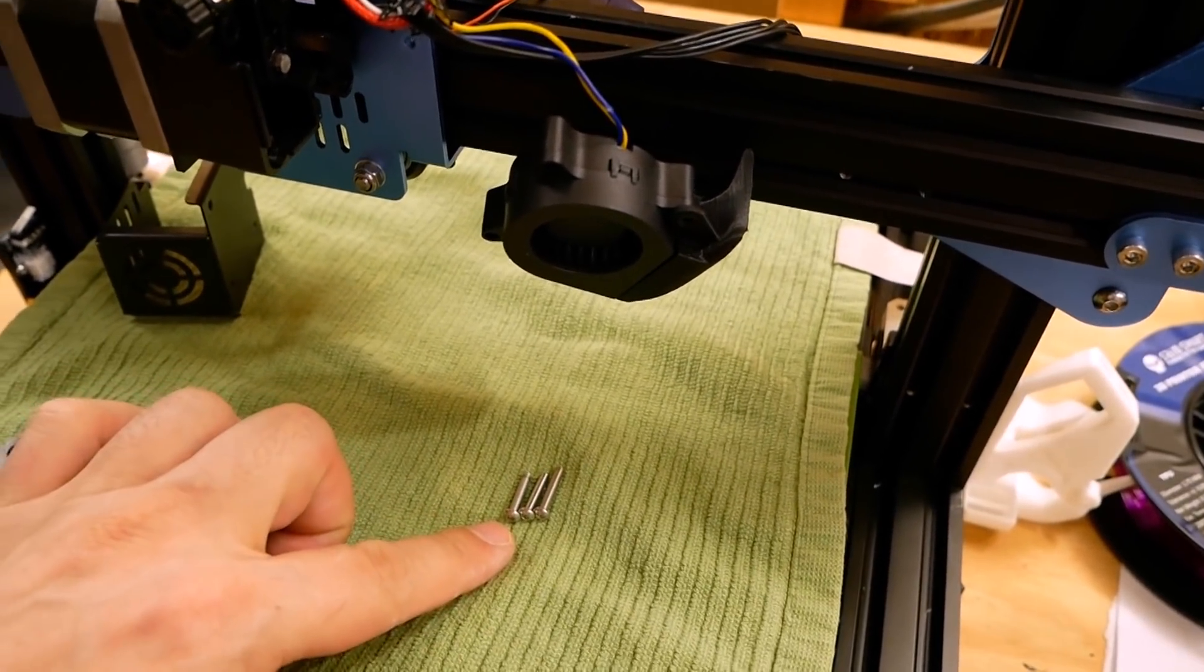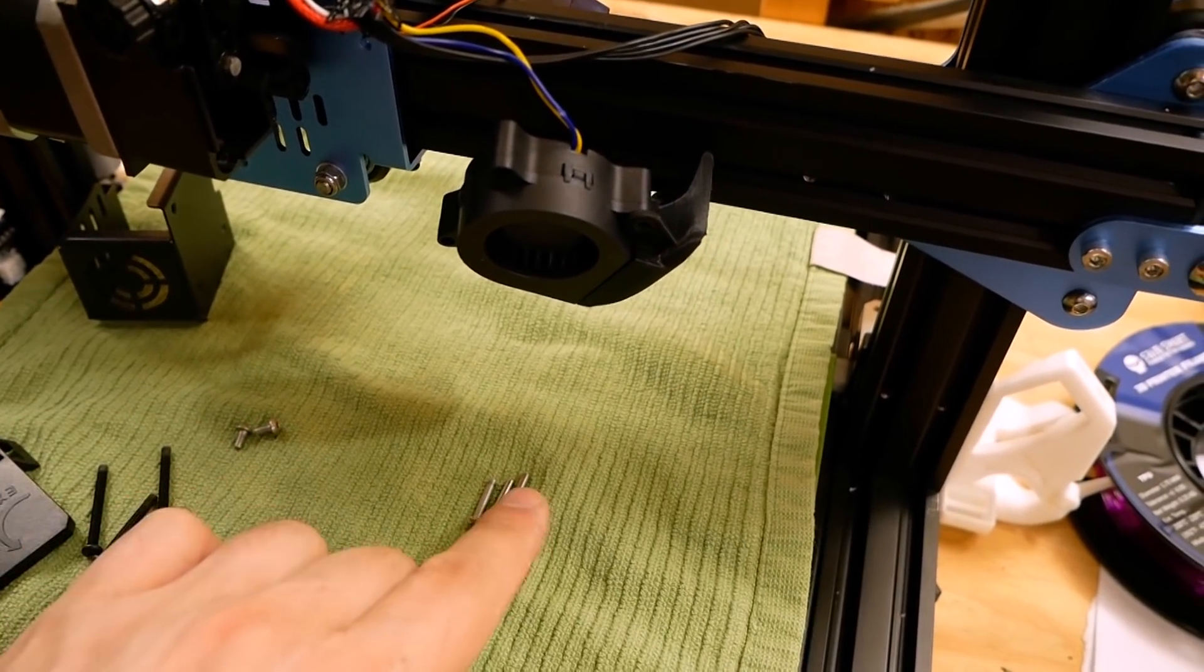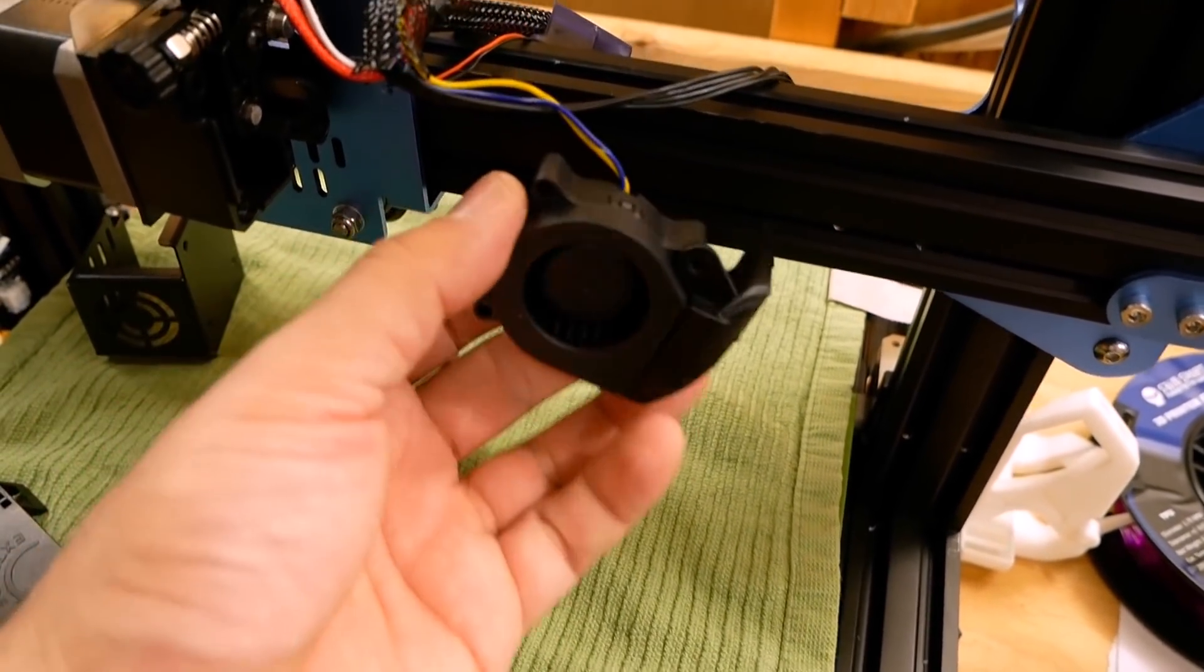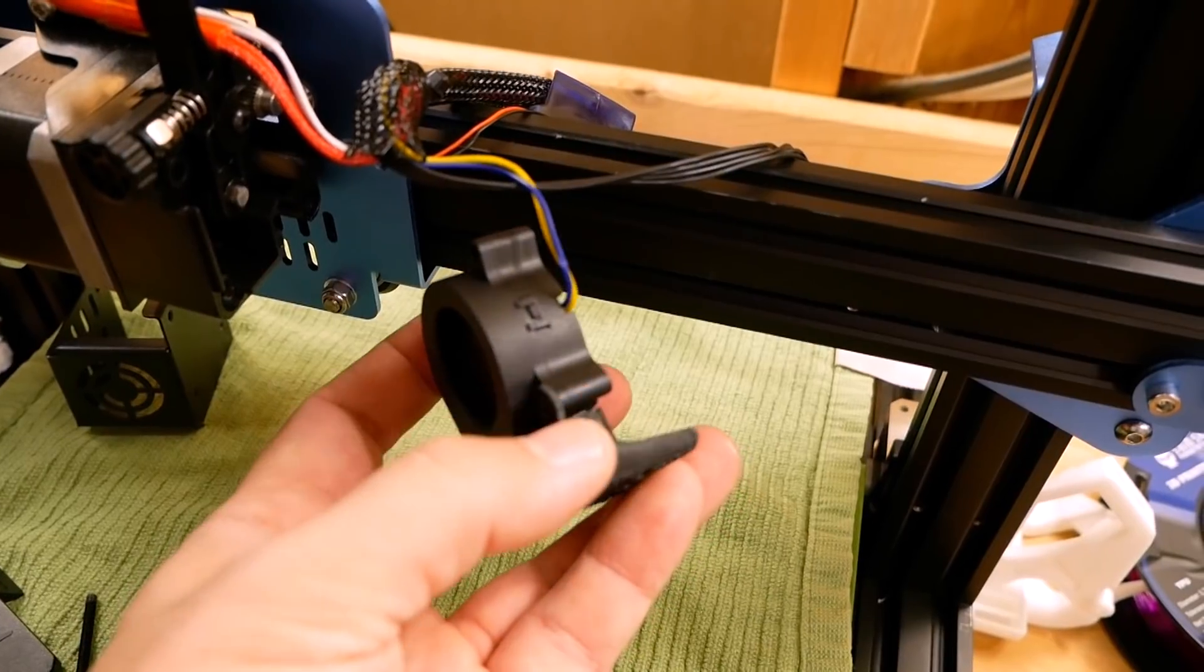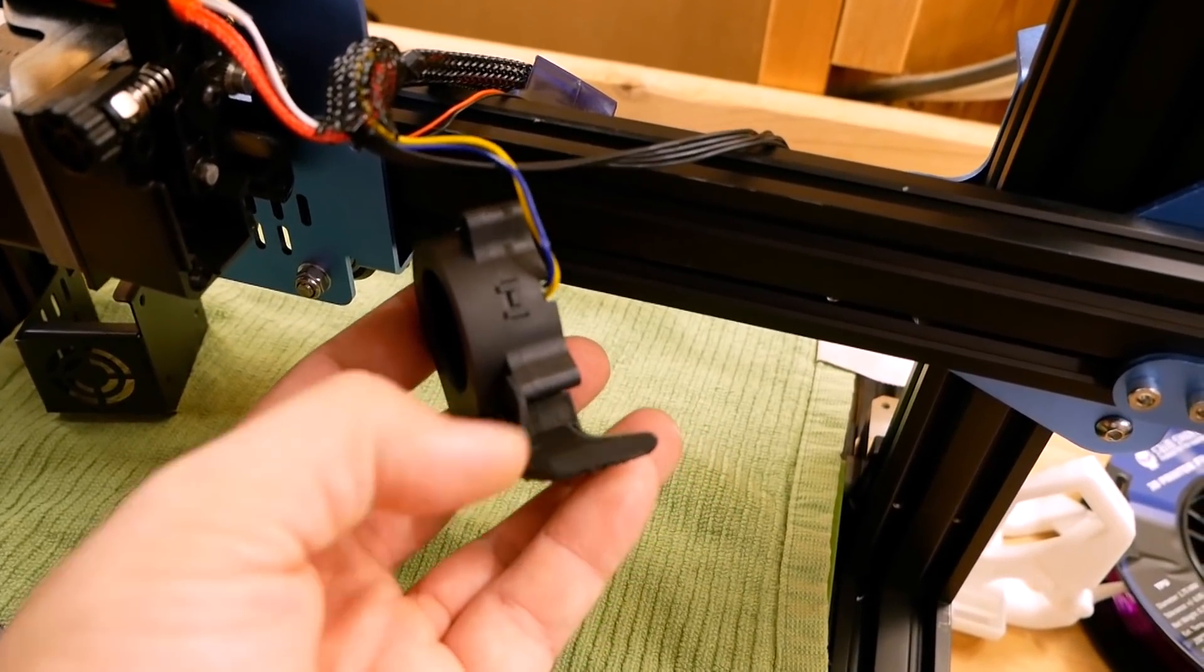And then you just put the whole thing back together the way that it was. One thing to keep in mind is that the screws for the part cooling fan—two of them are shorter and one is longer—and the reason for that is that one of those screws has to go through the actual fan guide. So make sure you put the longer one in the correct position.